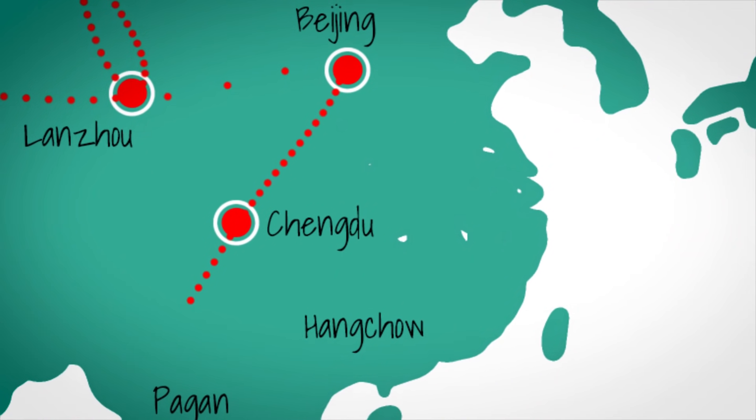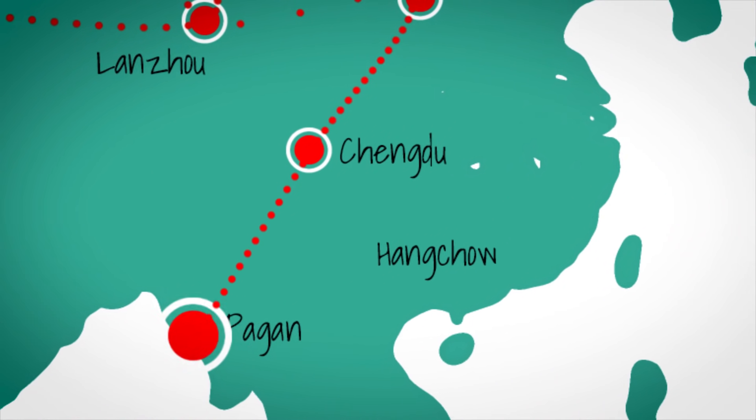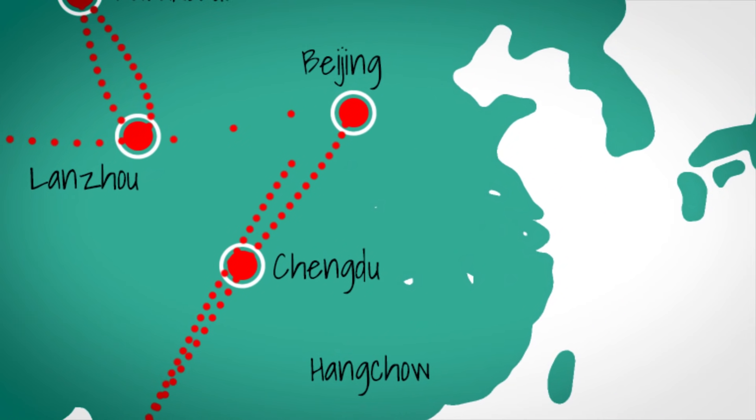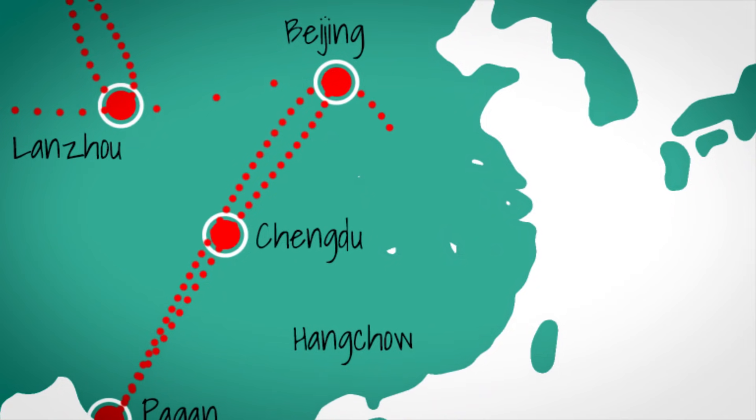Soon after returning to Venice, Marco Polo was captured during a sea battle with the Republic of Genoa. In jail at the age of 44, he began to recount his tales to a cellmate.